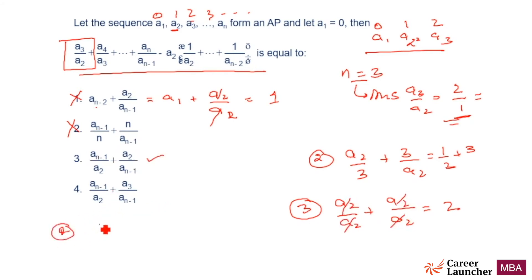An-1 is A2 upon A2, plus A3 upon A2. What does this mean? This is 1 plus A3 is going to be 2, plus 2 by 1, which is equal to 3. We need the value to be 2, this is going to be 3, the 3rd choice is gone, the 4th choice becomes the answer. So don't worry about all this. All such questions go by the first two terms.